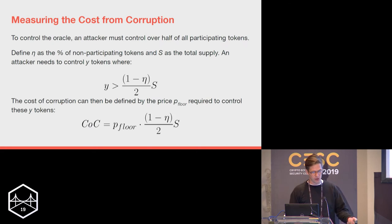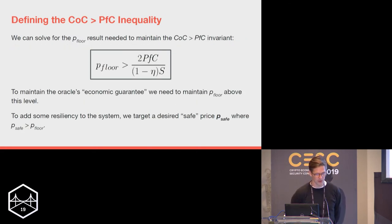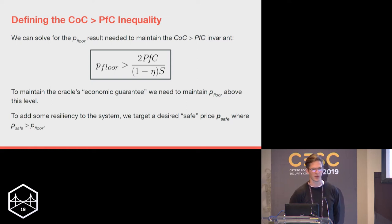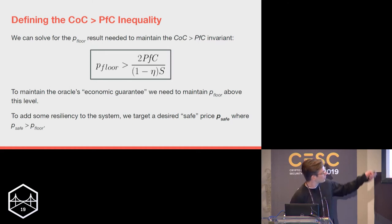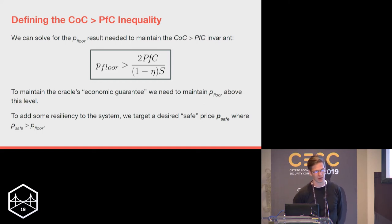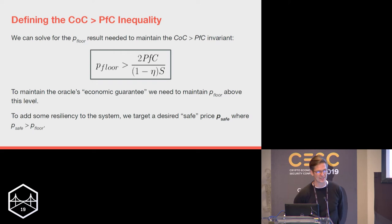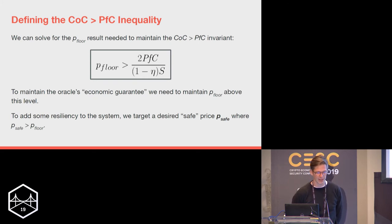Combining the CoC and PfC information with our CoC > PfC invariant, we can solve for the floor price at which the system is secure. With simplifying assumptions — 100% voter participation, eta equals zero — we get that the market cap of the voting token needs to be double the total value it's securing. If the system is securing $25M, we need 51% of the voting rights to cost at least $25M, meaning the full market cap needs to be greater than $50M.